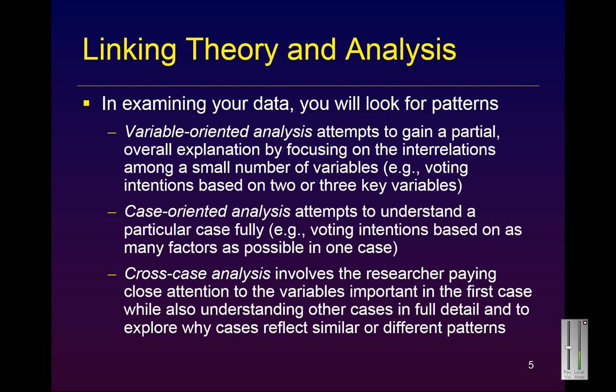Looking at those six items: one, frequencies; two, magnitudes; three, structures; four, processes; five, causes; six, and the consequences. We can compare those to the bullet items in slide five to understand how each of those fits in during the course of a qualitative analysis. When we are using variable-oriented analysis and focus on the interrelations of just a few variables, we may be looking at frequencies, magnitudes, structures, processes, causes, and consequences. Case-oriented analysis — again, depending on the case, we may be looking at all those patterns. And a cross-case analysis is simply an analysis of the case-oriented study that involves multiple cases.